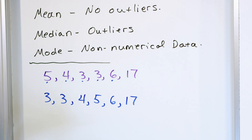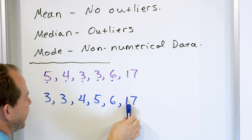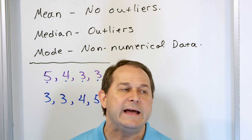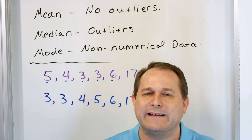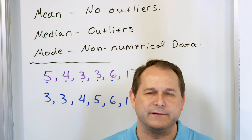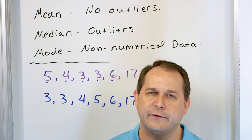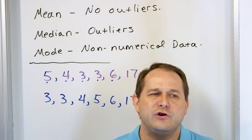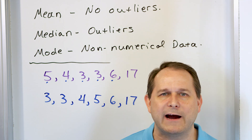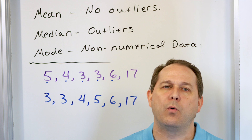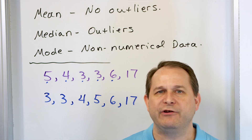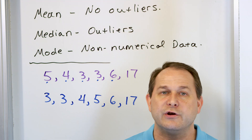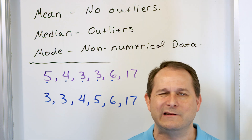Does one of these numbers jump out at you? If it's the age of a child when they learn how to ride a bike — three-year-old, four-year-old, five-year-old, six-year-old, 17-year-old — the 17-year-old is probably an outlier. It's possible that person just never learned how to ride a bike. When I say outlier, I'm not saying it's absolutely impossible. I'm saying that data point is so far different from the others that if you're really just trying to understand in general when kids learn to ride their bike, you may not want to weight it as much as the other data points.